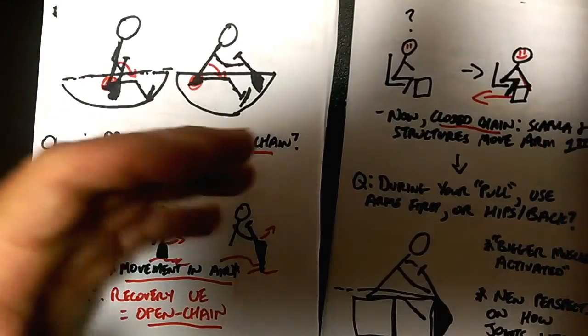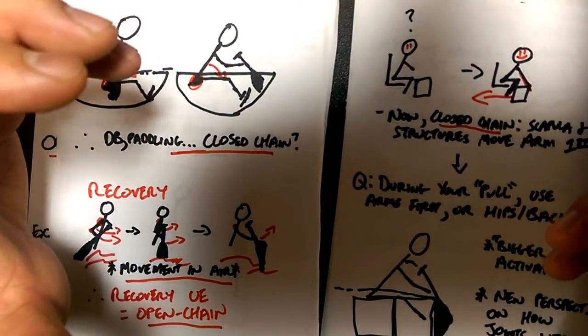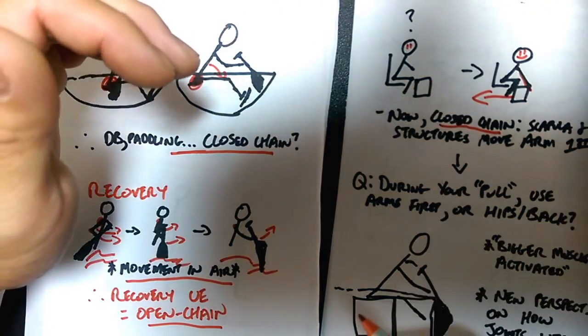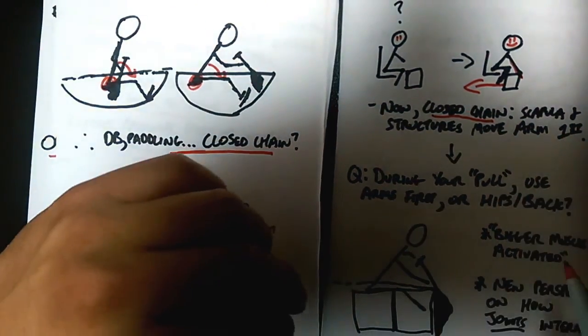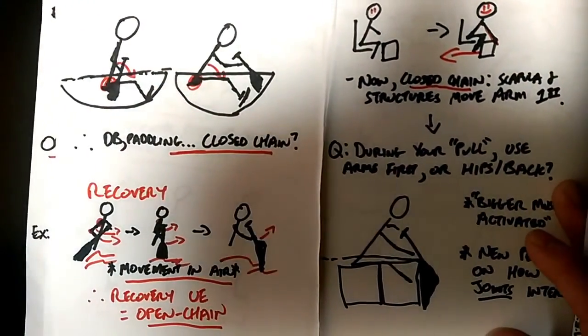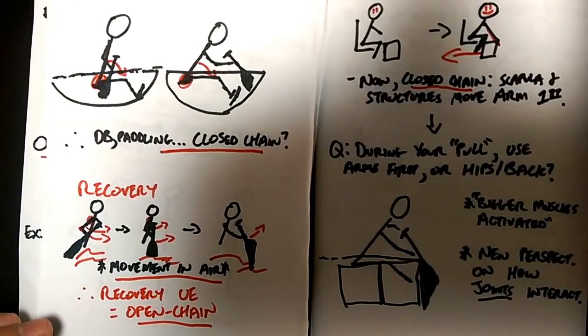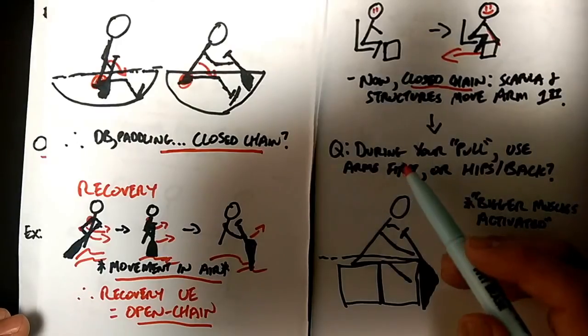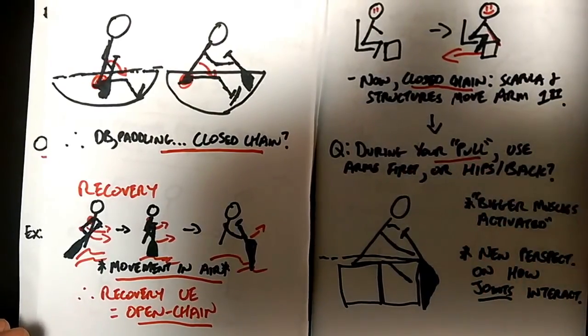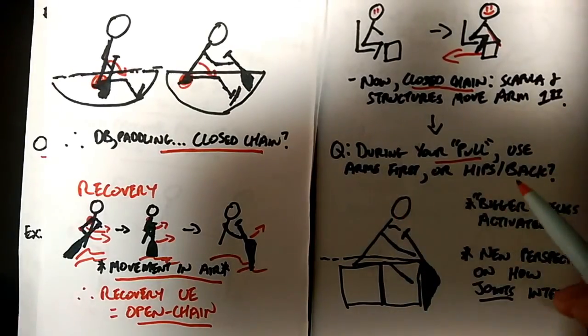So once you've made contact with the box, it's your back, it's your hips, it's your shoulder that's moving the arm back. So if you look at this picture then, and then come on here and look at this picture of yourself in a boat, I want you to think about this question. During your pull, is it better to use your arms first or your hips and your back?